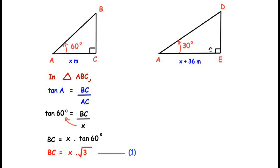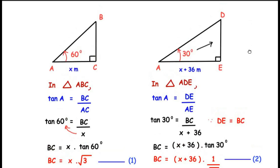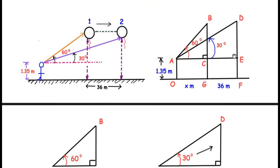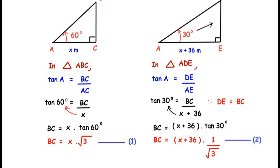For triangle ADE, tan(A) = DE/AE. Since BC = DE (equal heights), we substitute BC. The total length AE = AC + CE = X + 36. So tan(30°) = BC/(X + 36). Rearranging, BC = (X + 36) × tan(30°) = (X + 36) × (1/√3). This is Equation 2.